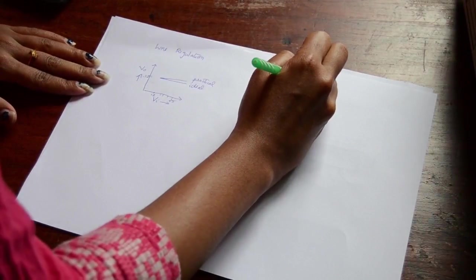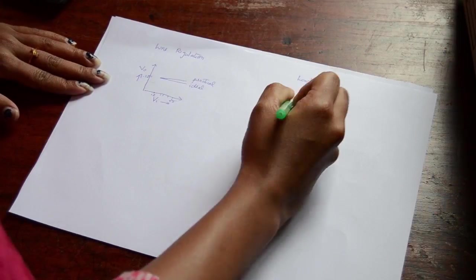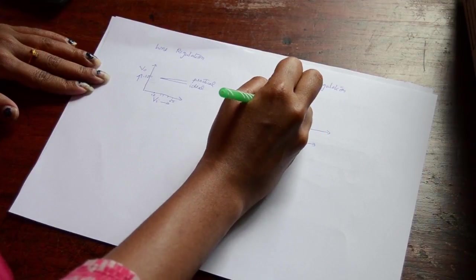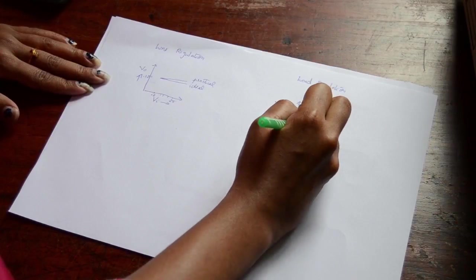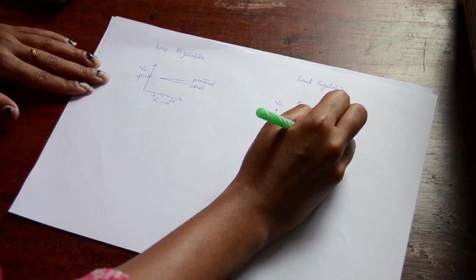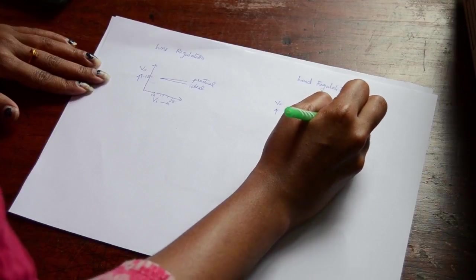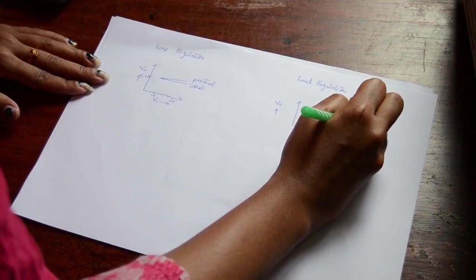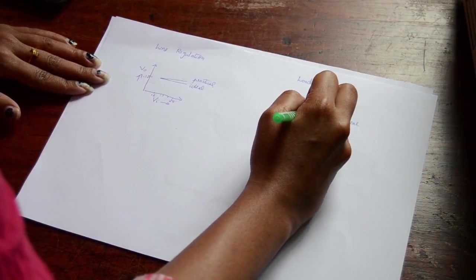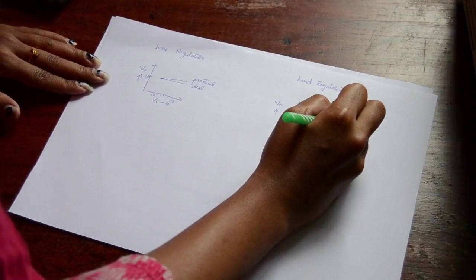Now let's take a look at load regulation. Here we have the load current along the X axis and the output voltage along the Y axis. In the ideal condition, the output voltage will remain constant irrespective of any variation in the load current. But in the practical situation, after the value crosses the designed value of 500 milliamperes, we could see a slight reduction in the output voltage.